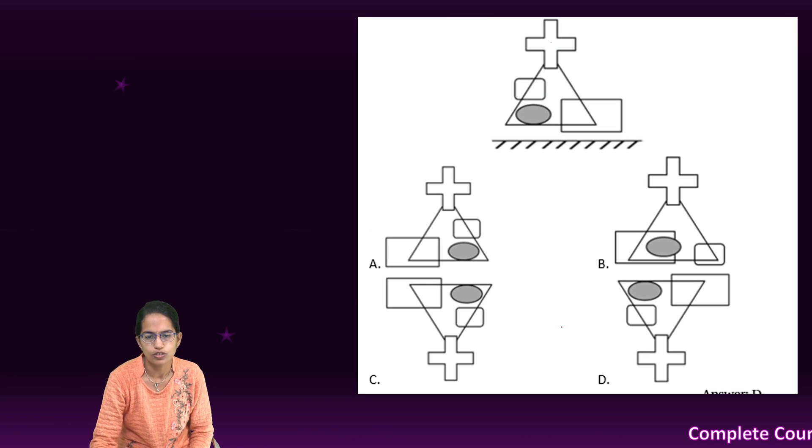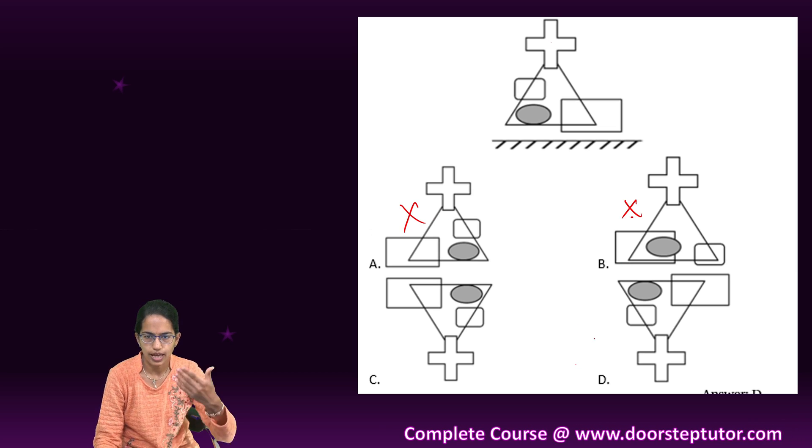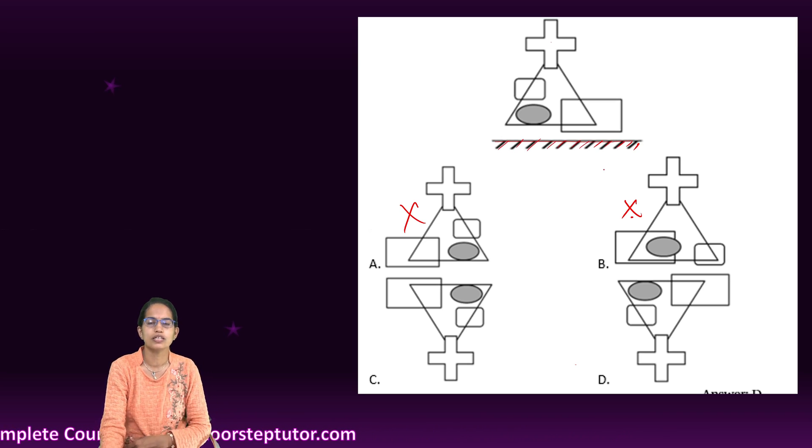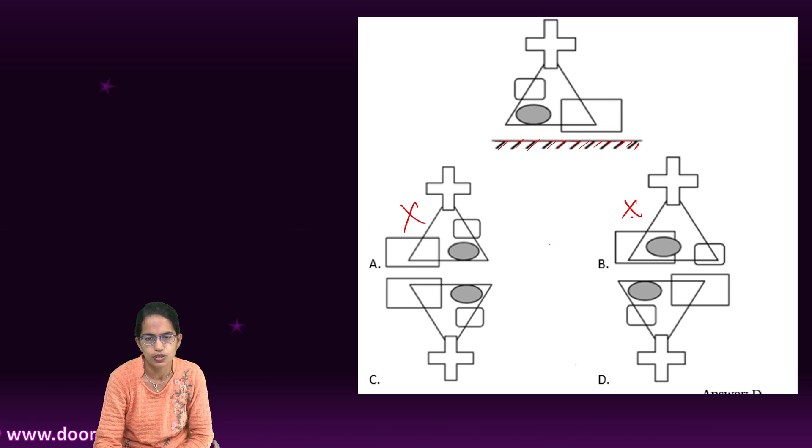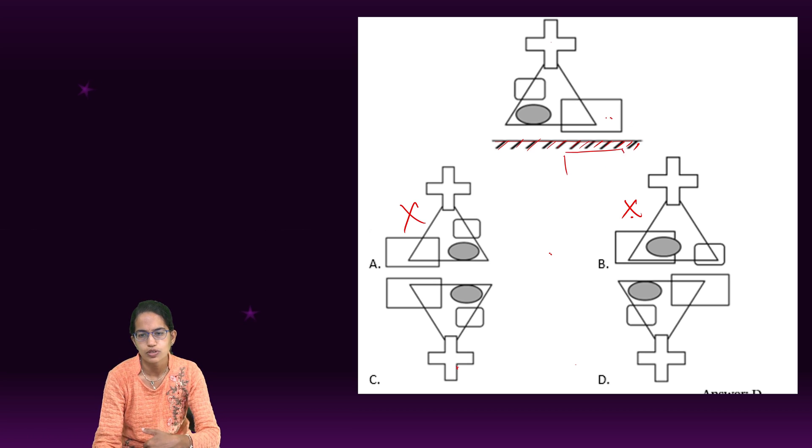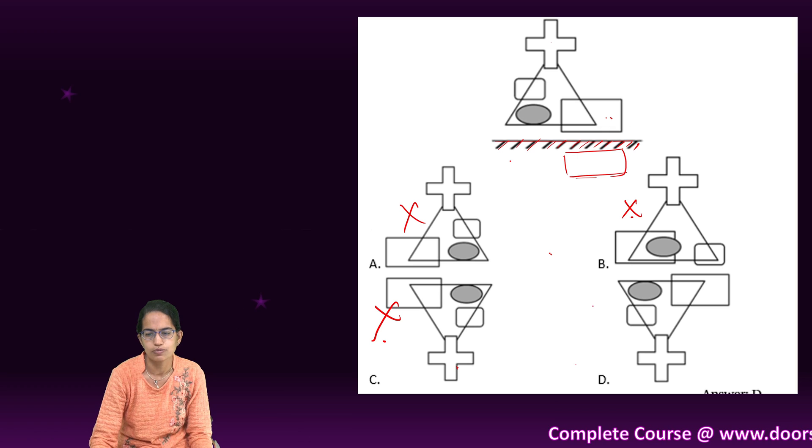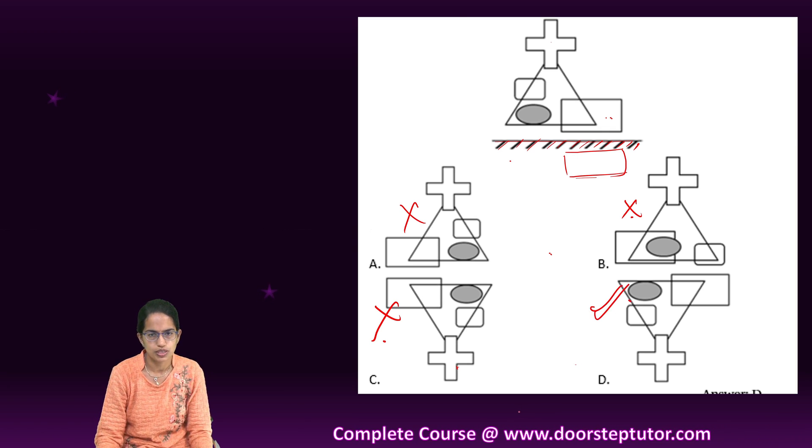Let's do another question. So here again, this cross would go at the bottom. So first and second cannot be the choice. I am doing the water image. This line is here and shaded. And this line itself signifies that it is water image. So this cross has to be on the bottom. And this rectangle would remain on the same side. So rectangle would remain on this side only. It won't change in the direction. So C cannot be the option. So only D cannot be the right option here.